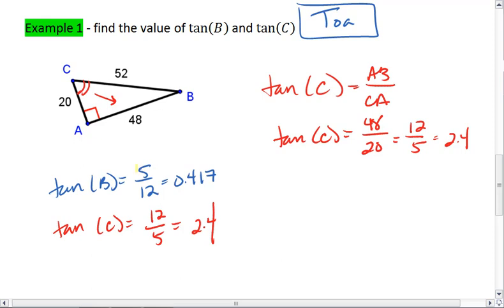You might notice that tan B and tan C are reciprocals of one another. Let's think why this would be. Tan B is opposite over adjacent, where our opposite is 20 and our adjacent is 48.